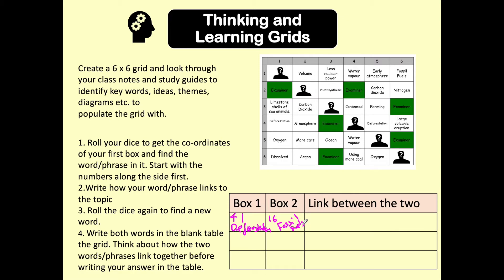So the link between deforestation and fossil fuels. We could talk about the combustion of fossil fuels in that combustion increases the amount of CO2 in the atmosphere, but so does deforestation. Because if we are cutting down more trees, we're not removing as much carbon dioxide from the atmosphere. Therefore, both of these contribute to increased amounts of CO2.